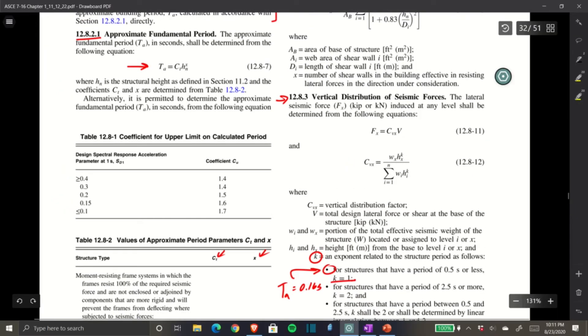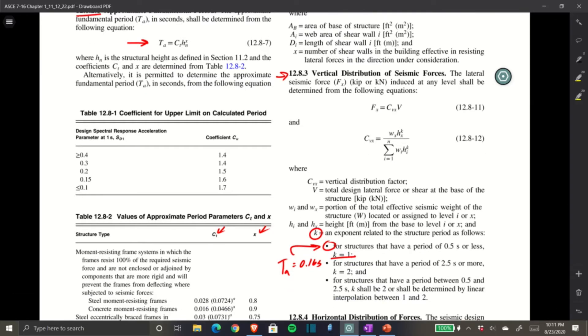So we're still in section 12.8.3, vertical distribution of seismic forces. So the lateral seismic force fx kips or kilonewtons induced at any level shall be determined from the following equations. So fx equals cvx times v. So that's your base shear v. And then cvx is basically the distribution, the vertical distribution factor as stated down here. And cvx is this big gnarly equation, but it's really not that scary. But that's where we come into effect of wxhx raised to the k over the summation of all wxhx to the k of every story, of every level.